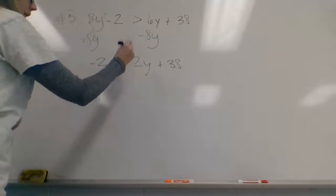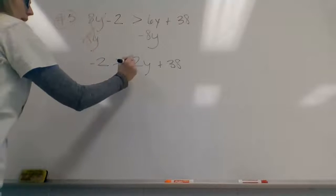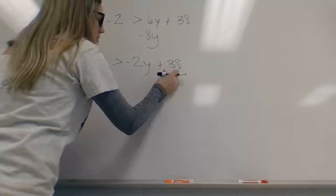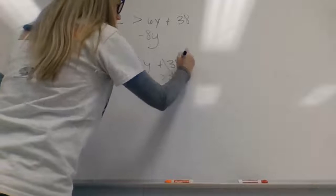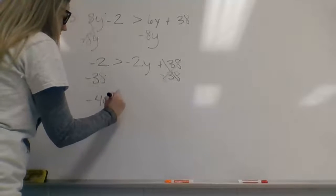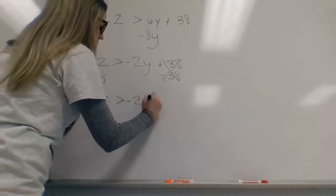Now, because I moved my y's from left to right, I want to move my naked numbers from right to left. So I'm going to subtract my 38 in order to cancel it out. So I'm left with negative 40 is greater than negative 2y.